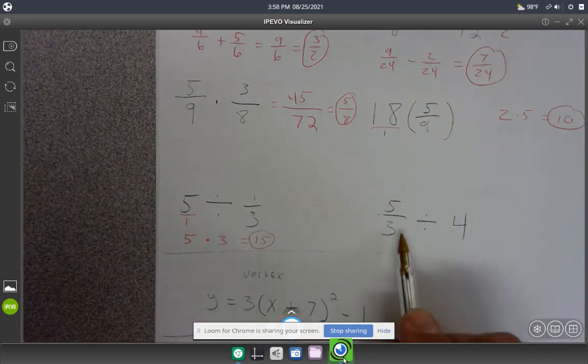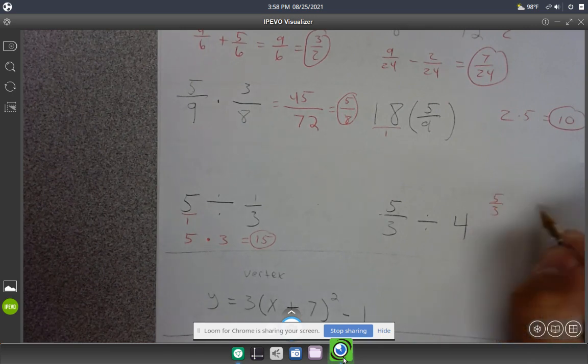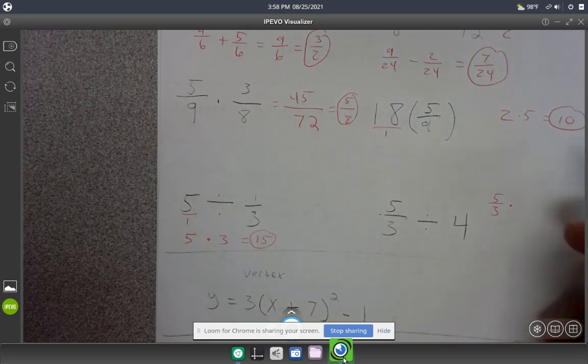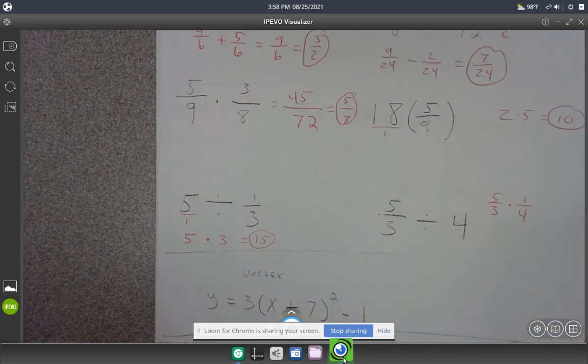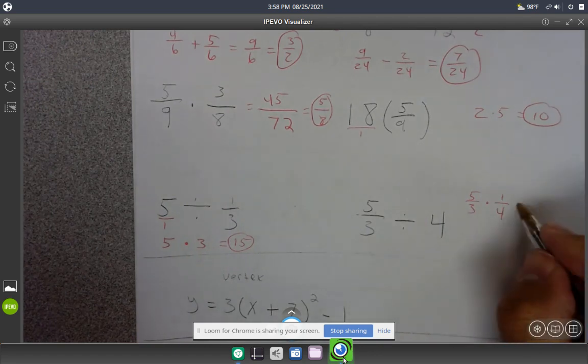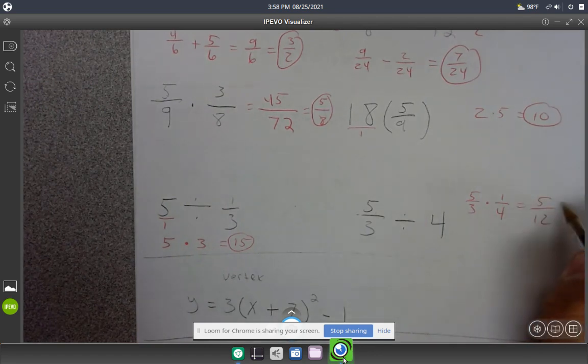For this one, keep, change, flip. It's 5/3 multiplied by, and flipping the 4 gives 1/4, which is the reciprocal of 4. Multiply to get 5/12.